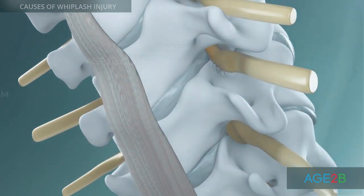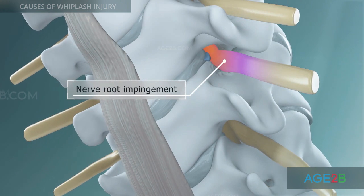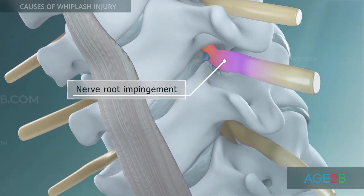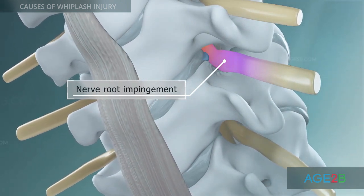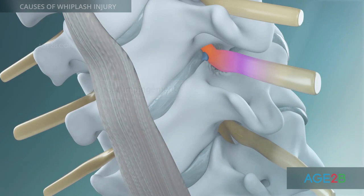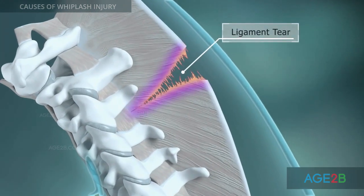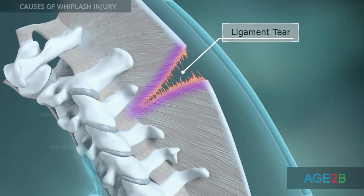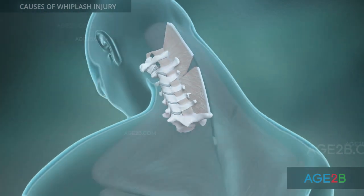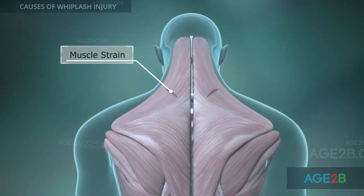Spinal nerves and the spinal cord can become impinged by a herniated disc or bone spurs after the trauma. Muscle strain and ligament strains or tears are commonly caused by whiplash injury.